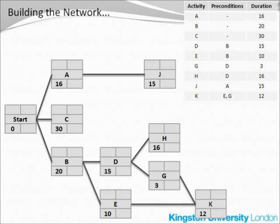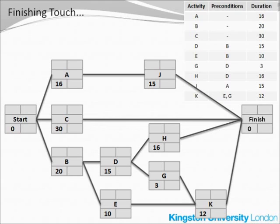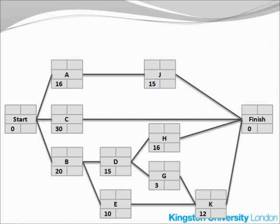We are almost finished, but we cannot leave any of the nodes without a line outgoing from that node. So what we need now is a finishing node, which would follow every activity that is not yet finished. This is the activity network with all the activities in it, ready to start the calculations.